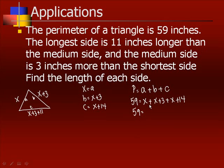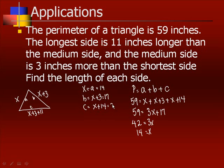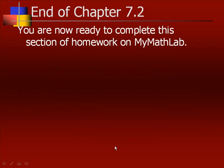So we get 3x plus 17 equals 59. Subtracting 17 from both sides gives 42. Dividing both sides by 3, we get x equals 14. Substituting back: a equals 14, b equals x plus 3 which is 17, and c equals 14 plus 14 which is 28. So the sides of our triangle are 14, 17, and 28. Now you're ready to complete this section of homework on MyMathLab.